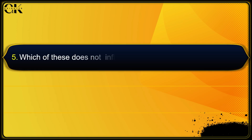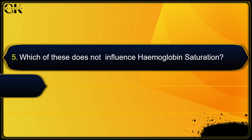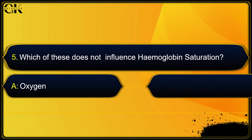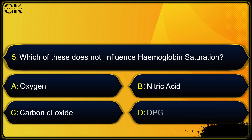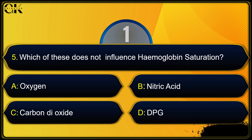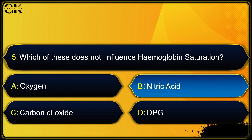Which of these does not influence hemoglobin saturation? Options: oxygen, nitric acid, carbon dioxide, or DPG. The answer is nitric acid.